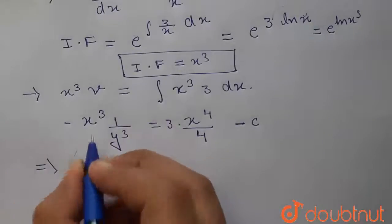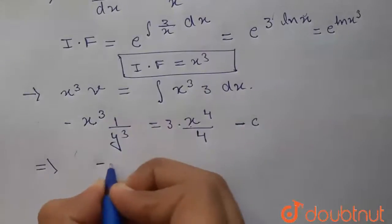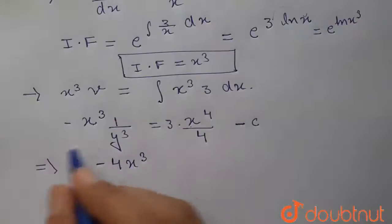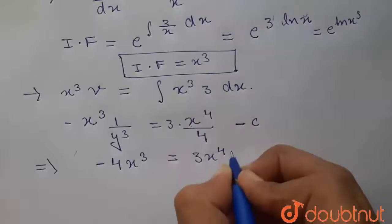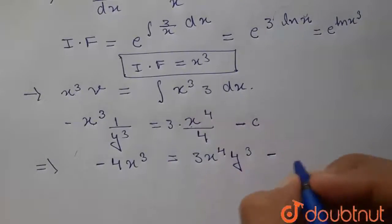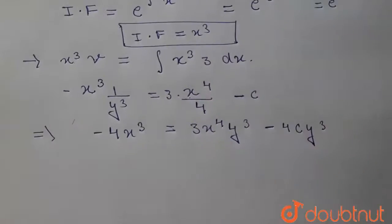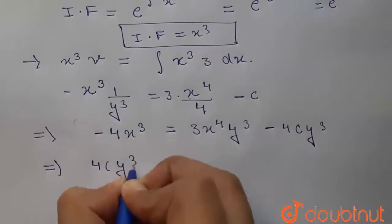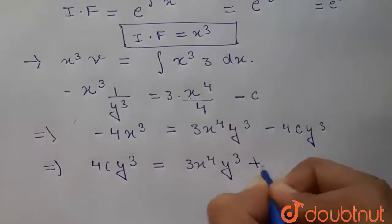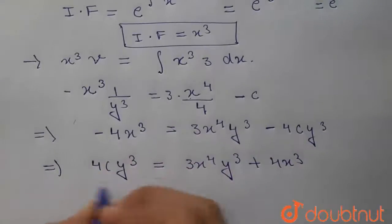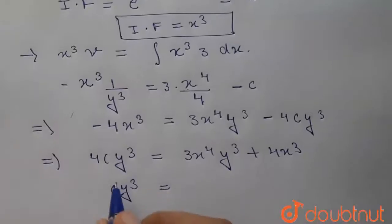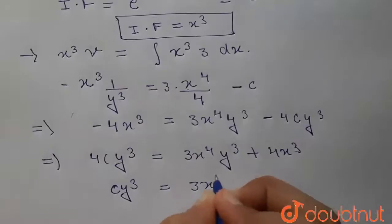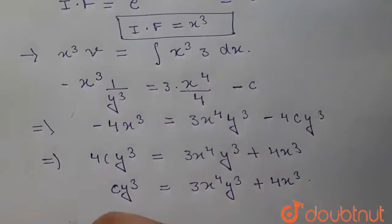We multiply this whole equation by 4y cubed. This gives minus 4x cubed, and y cubed cancels. On the right side, multiplying by 4y cubed gives 3x to the power 4 times y cubed, and then minus 4c y cubed. Rearranging, 4c y cubed equals 3x to the power 4 y cubed plus 4x cubed. Taking the constant as simply c y cubed, the answer is c y cubed equals 3x to the power 4 y cubed plus 4x cubed.